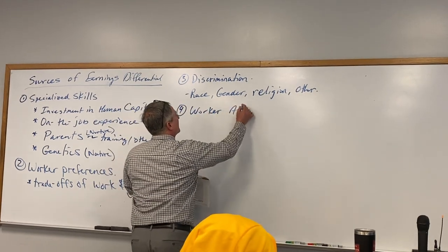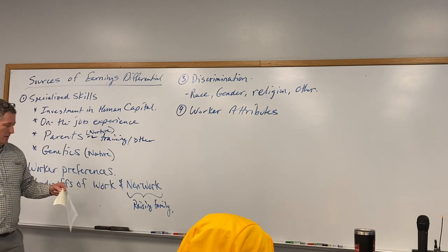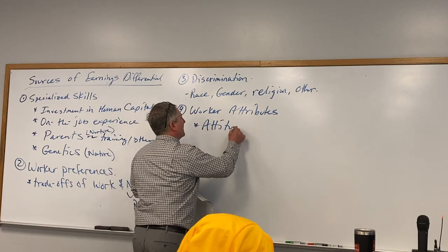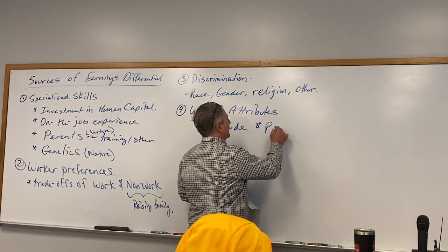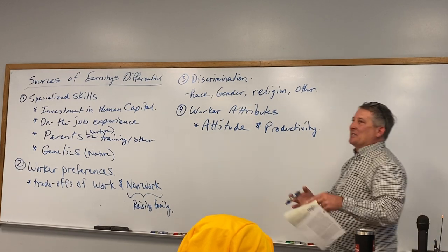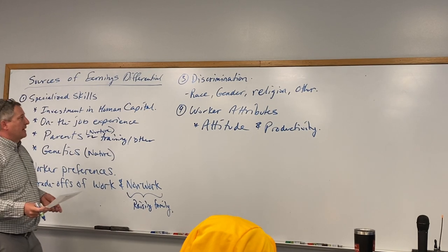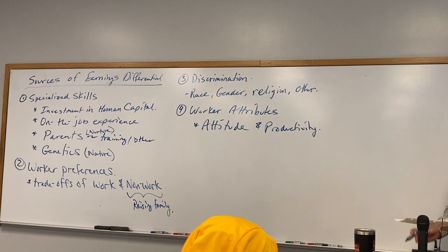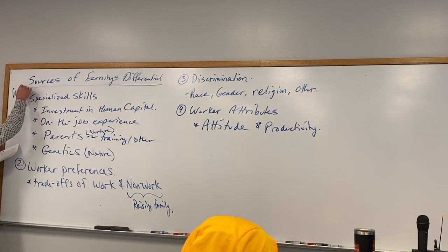Number four: worker attributes — attitude and productivity. Some people have a bad attitude 90% of the time, some only 10%. Everybody's a little bit different, and that can be shaped by what's going on with your family life. These are worker differences.